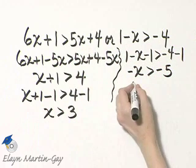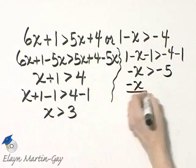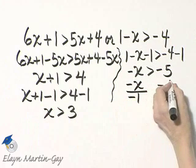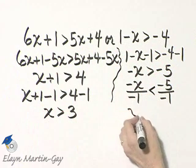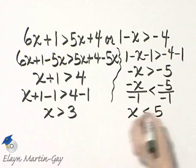How do we finish solving? We will take the left side and divide by negative 1 and the right side and divide by negative 1. Because we're dividing by a negative number, we reverse the direction of our inequality symbol. And we have x less than 5.